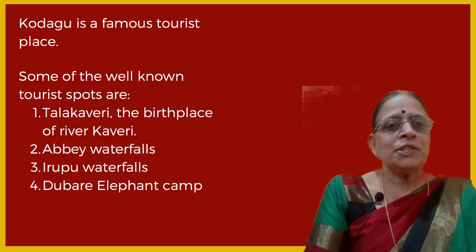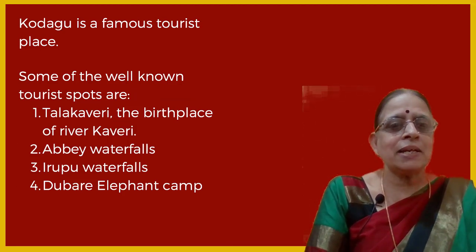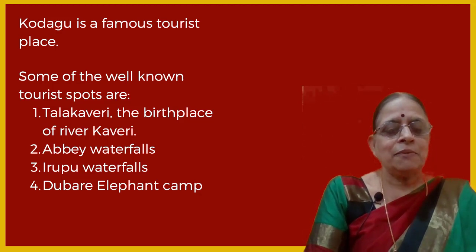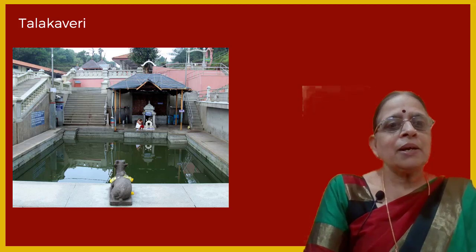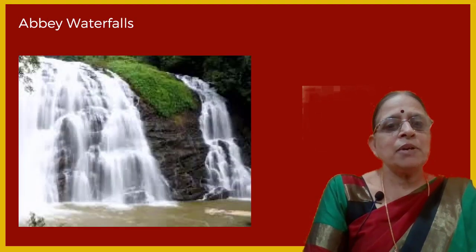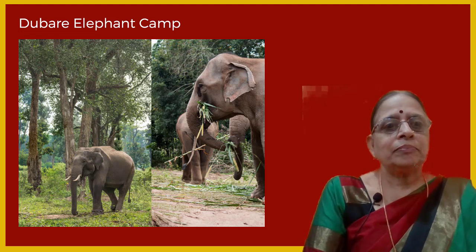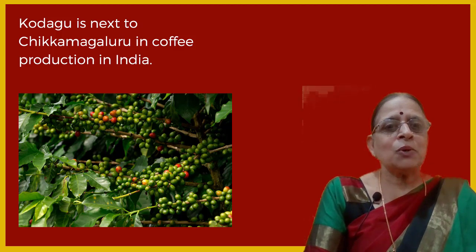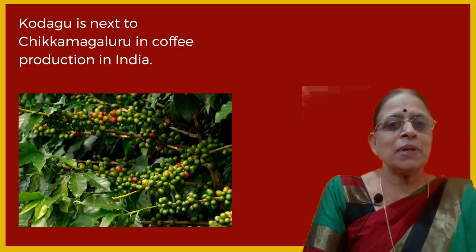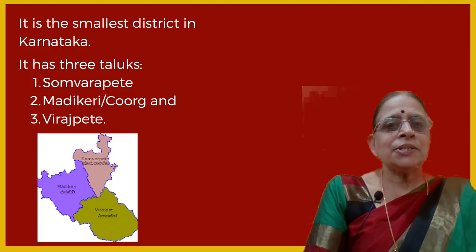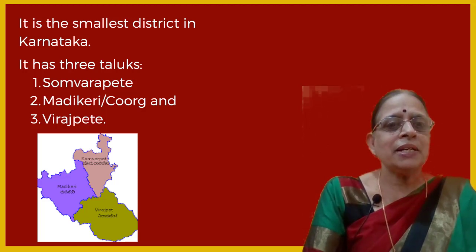Kodagu is a famous tourist place. Some well-known tourist spots are Talakaveri, the birthplace of river Kaveri, Abbe Waterfalls, Iruppu Waterfalls and Dubare Elephant Camp, where the elephants are trained. Kodagu is second only to Chikamangaluru in coffee production in India. It is also the smallest district in Karnataka, with only three taluks: Somvarpete, Madikeri and Virajpete.